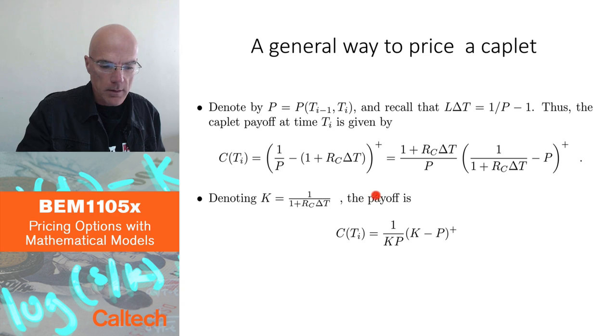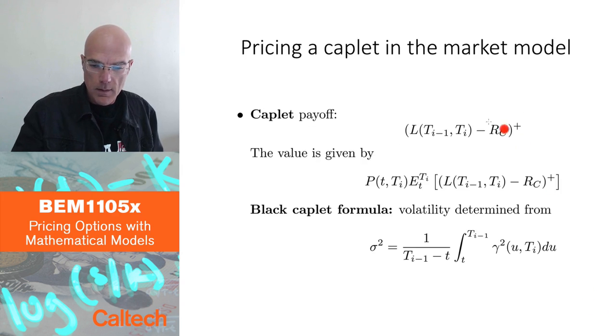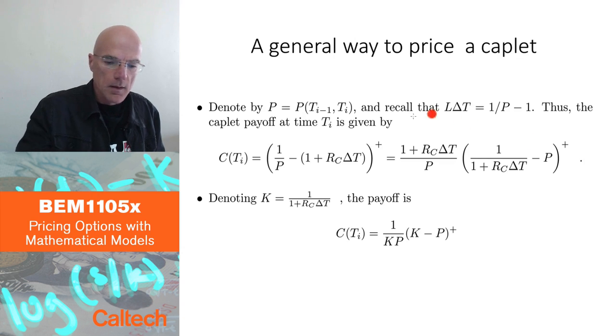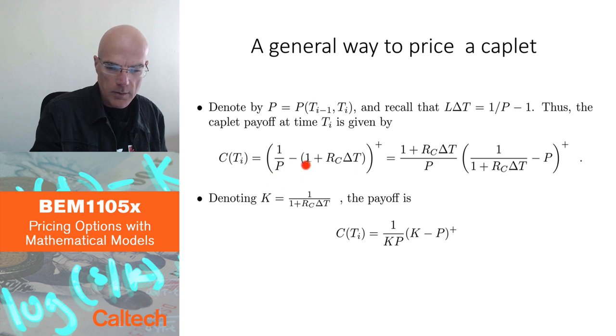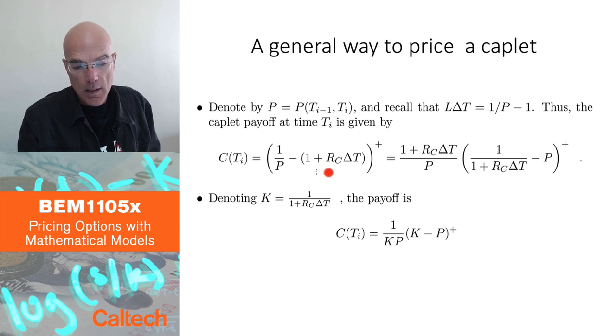So if I write the caplet payoff, it's this minus Rc, this over delta T minus Rc. So if I write the caplet payoff was written here, so instead of L, I write my formula. If you do that, you can write it as 1 over P, and then constant minus 1 plus Rc delta T positive. That's just replacing L from here, substituting L from here into the payoff of the caplet. Let's call that C of Ti, C for caplet. That's paid at time Ti.